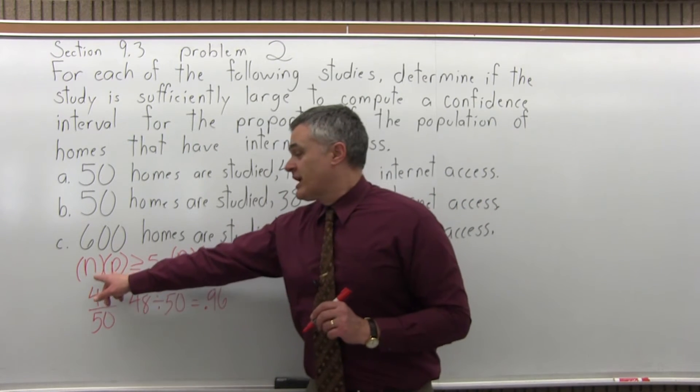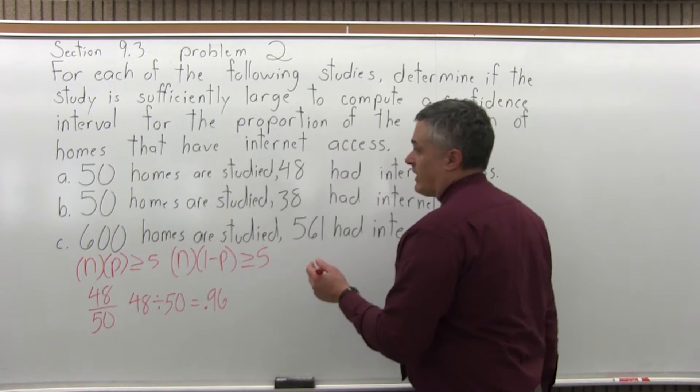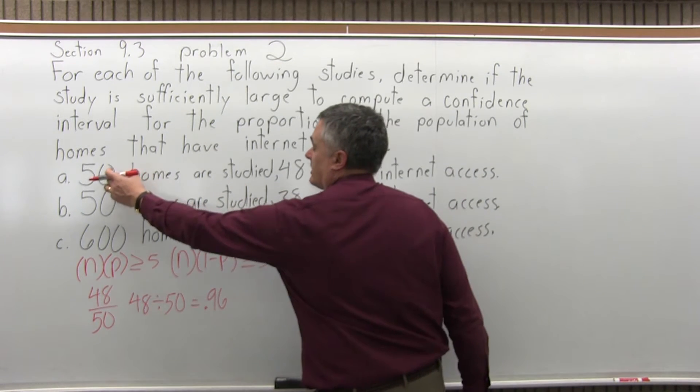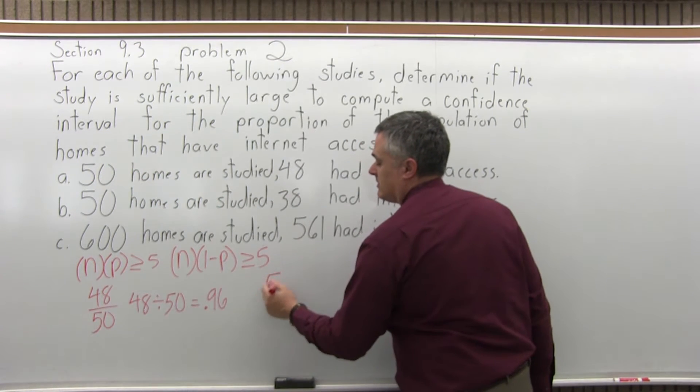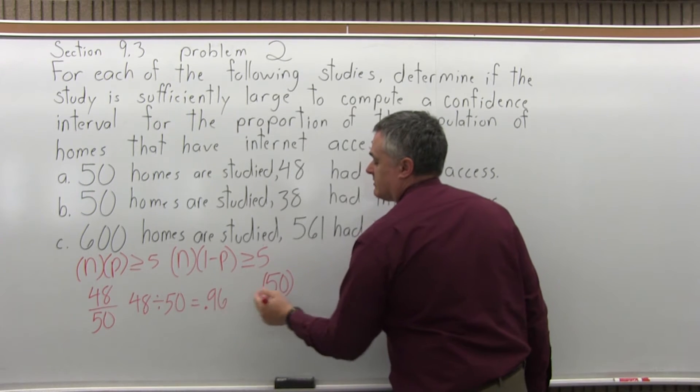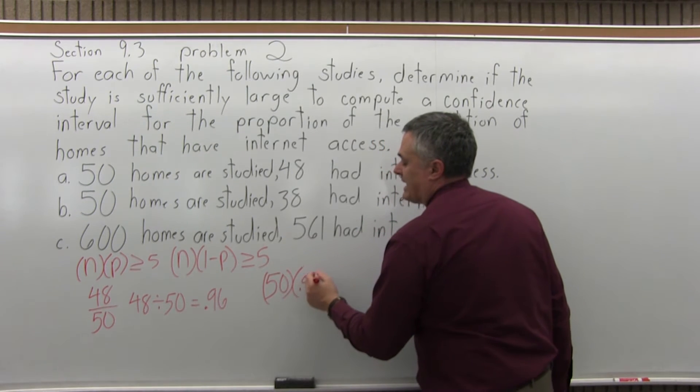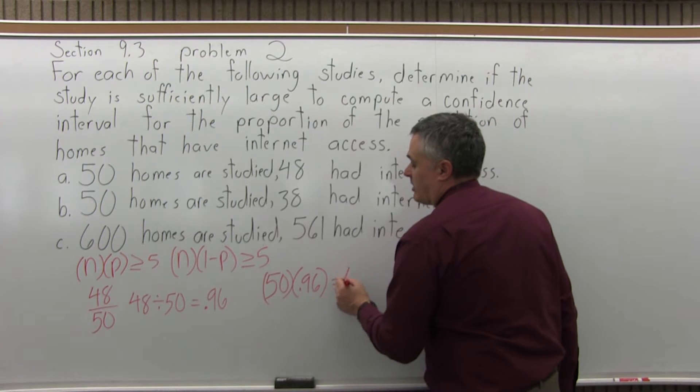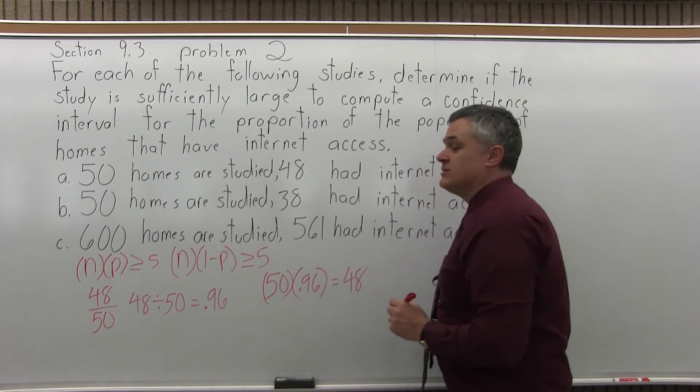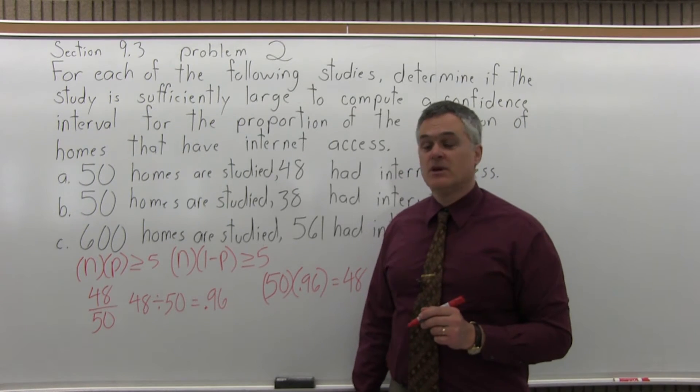So, let's check n times p. So, n, the number of homes surveyed would be 50, times p, and we're estimating p with our .96. That multiplies out to 48. So, that's bigger than 5.